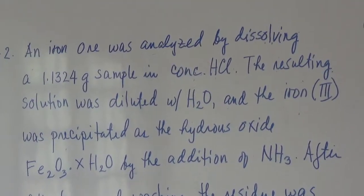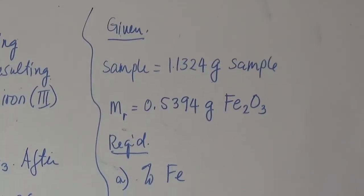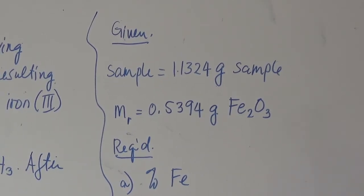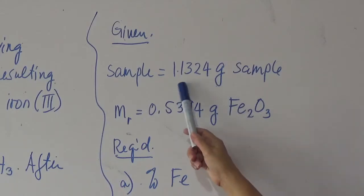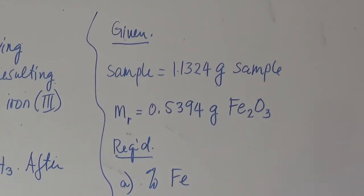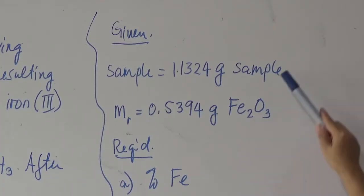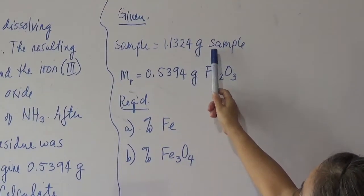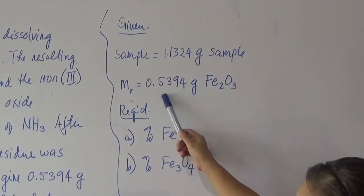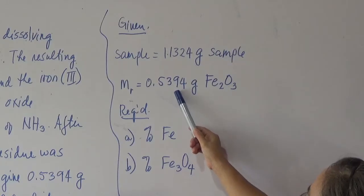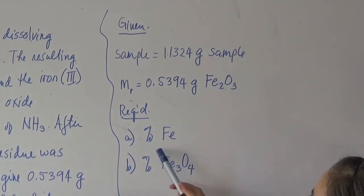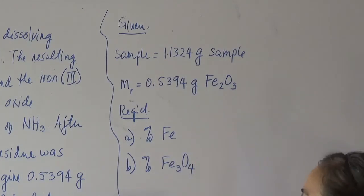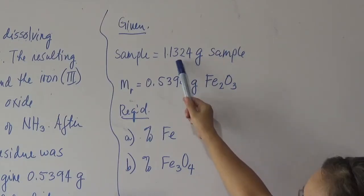So let's proceed to the solution. We have the mass of the sample. As mentioned in our PowerPoint, two data must be needed — both are masses: mass of the sample and mass of the precipitate or residue of known composition. Mass of the sample is 1.1324 grams. The mass of the dry residue — ferric oxide — is 0.5394 grams. We are going to determine the percentage of iron present in the sample, and the amount of magnetite, Fe₃O₄, present in the sample.